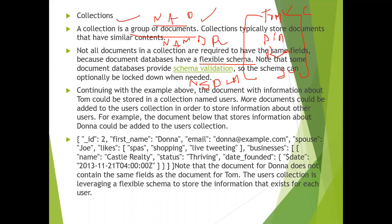Note that some document databases provide schema validation — some document databases allow only the same schema. Tom could be stored in a collection named 'users'. More documents could be added to the user collection to store information about other users.